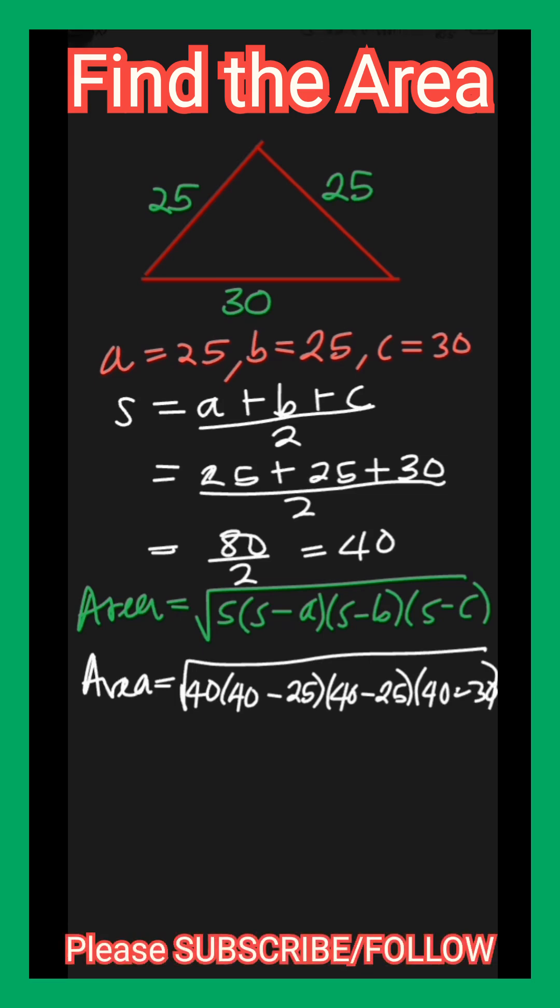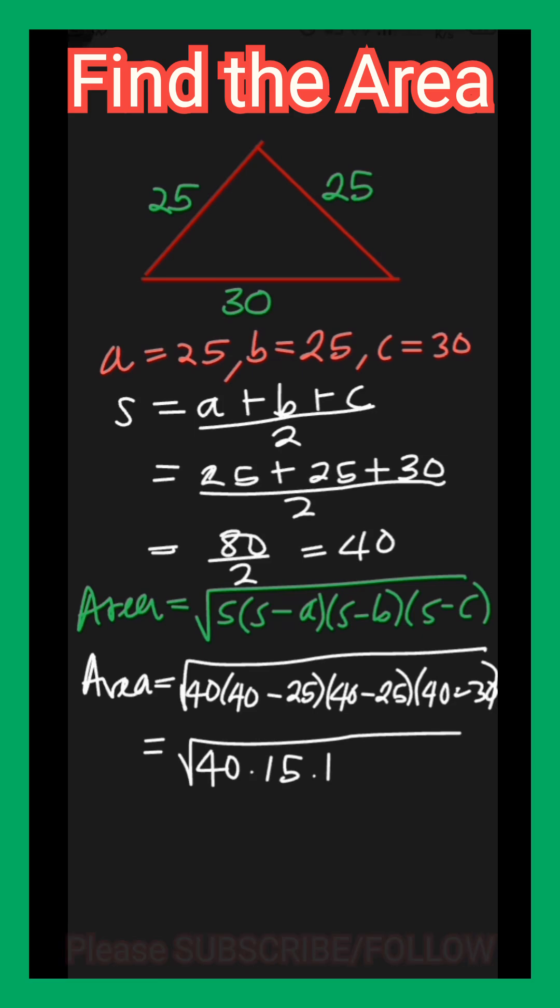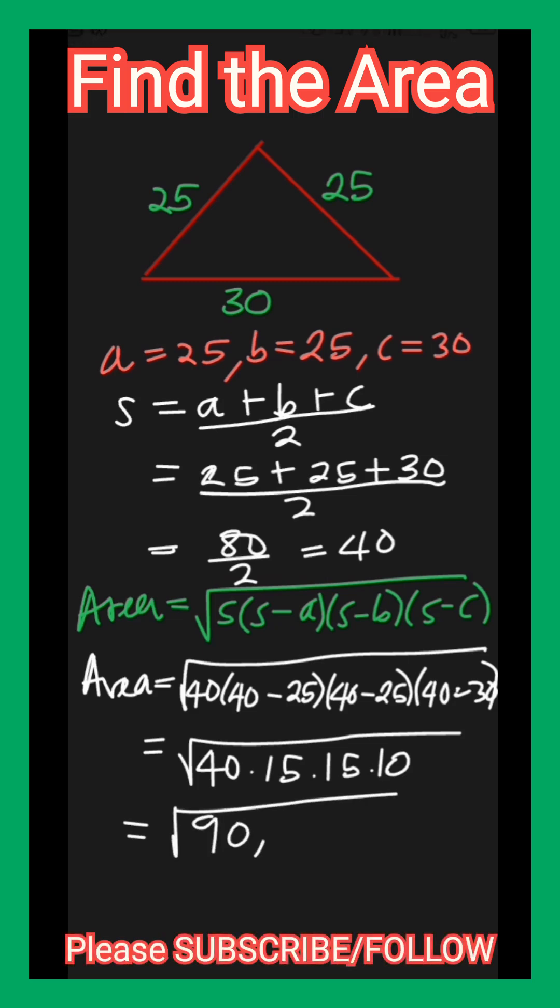This is equal to the square root of the product of 40, 15, 15, and 10. That gives the square root of 90,000, which is 300 square units.